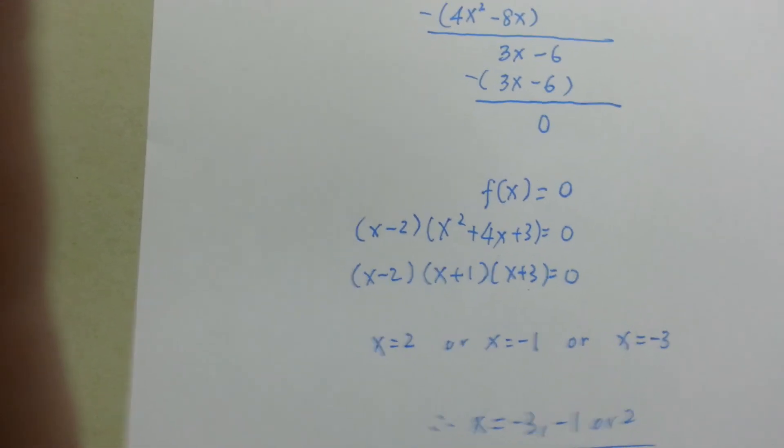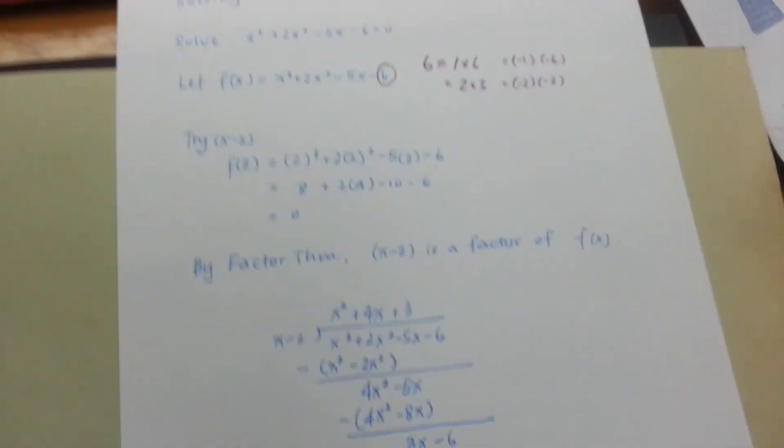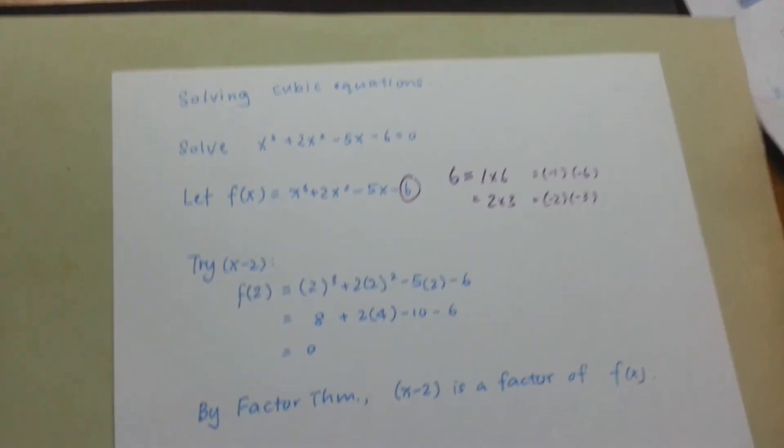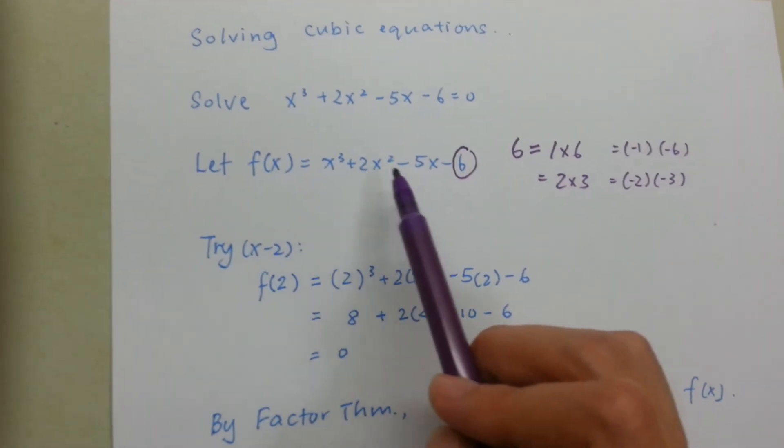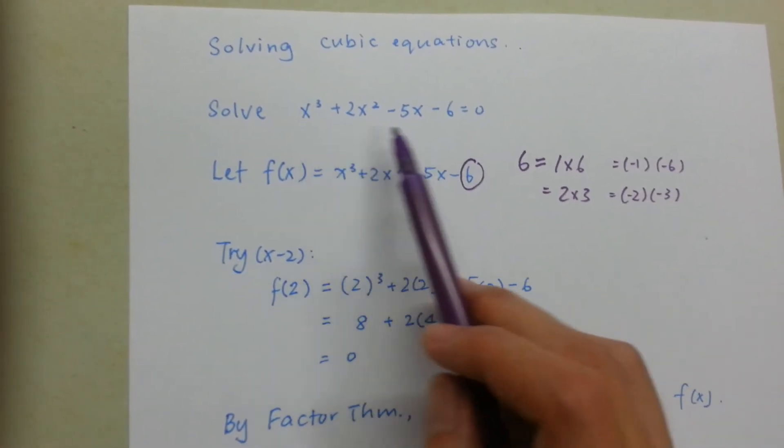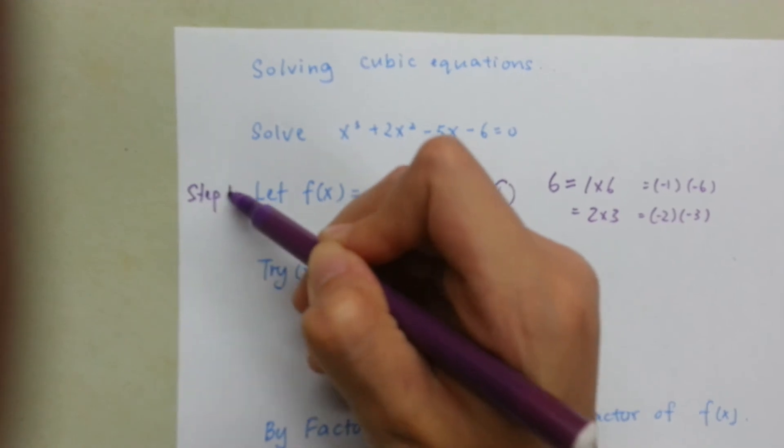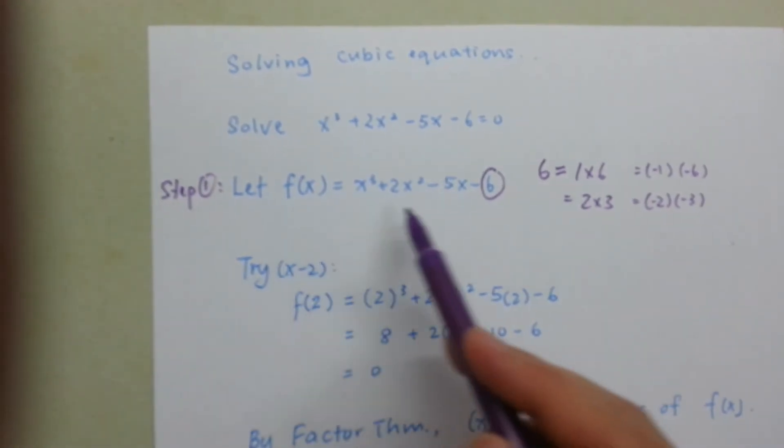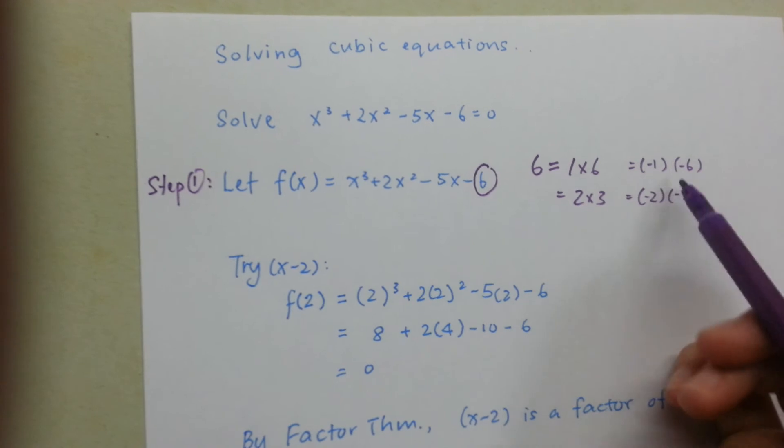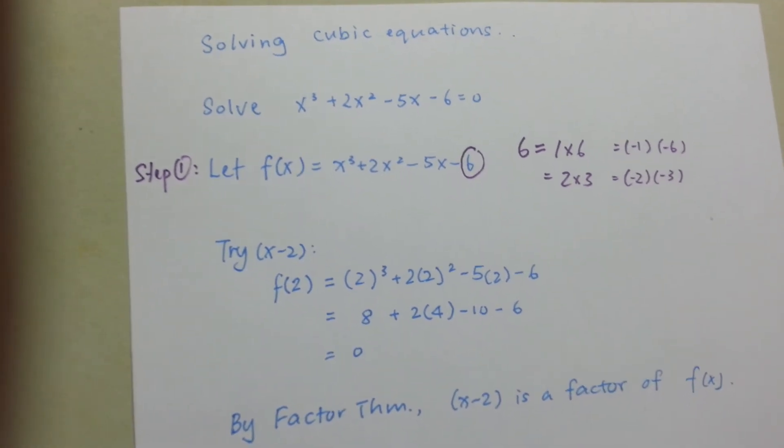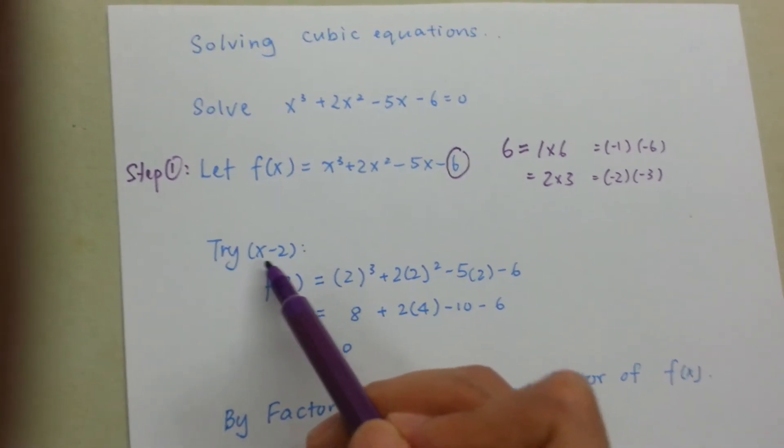Let's go through the steps again. First, the question wants us to solve a cubic equation. Check that it's already in order. If not, arrange it in order of the powers. First step, I will let f(x). Then I'm going to look at the last number, which is the constant, and try all the factors.